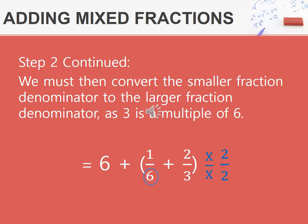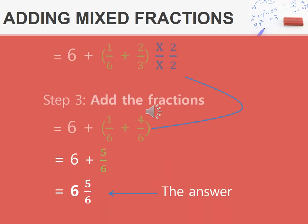Here we will be adding the fractions. Firstly, we have to convert the 2 thirds to the same denominator as 1 sixth. To do this, we must multiply 3 times 2, and remember, whatever we do to the bottom, we must do to the top. Step 3 is to add the fractions plus the whole number.